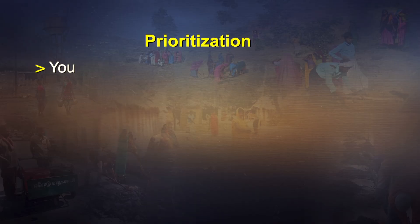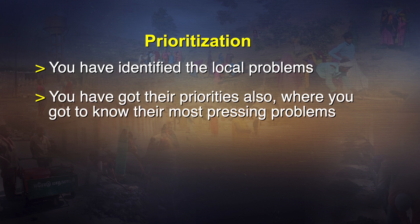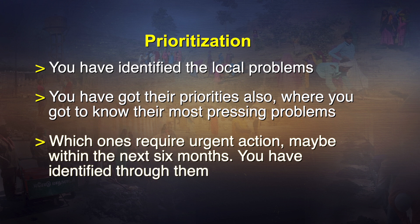Through the NSL chart, you have identified the local problems and their priorities — the most pressing problems requiring urgent action, perhaps within the next six months. Find if there are any local solutions they can think of, where you need to play the facilitator role along with the panchayats. If you are to address the problem, ask them in what way they shall contribute in terms of time, finance, participation, mobilizing, and abiding by what is agreed.